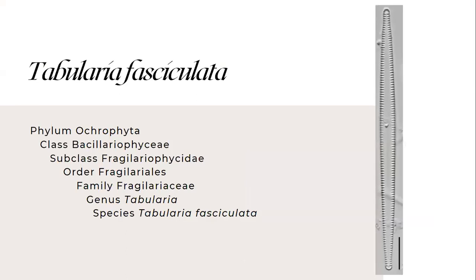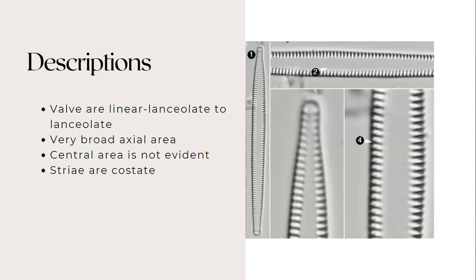And for the last, it's named as Tabellaria fasciculata from the family Fragilariaceae. So its descriptions are that the valves are linear lanceolate to lanceolate in shape. It has a very broad axial area and its central area is not evident and its striae are costae.